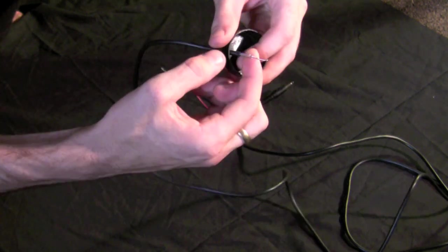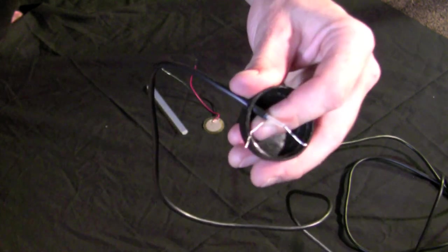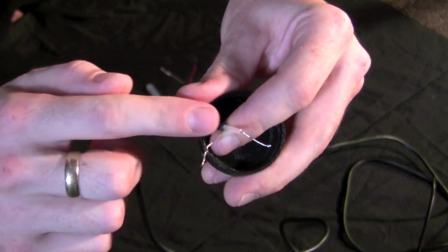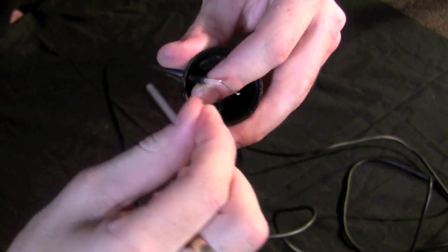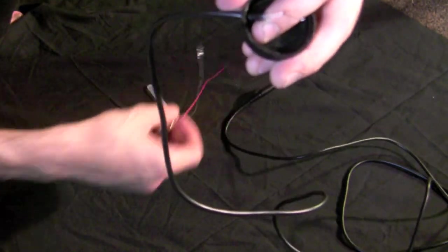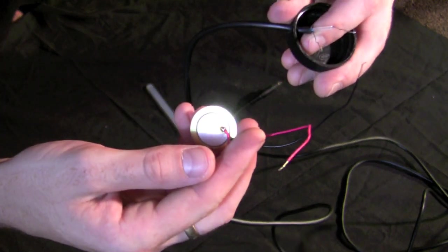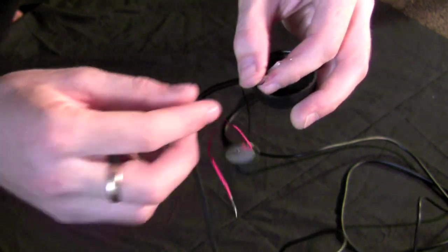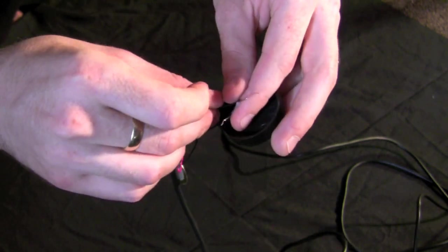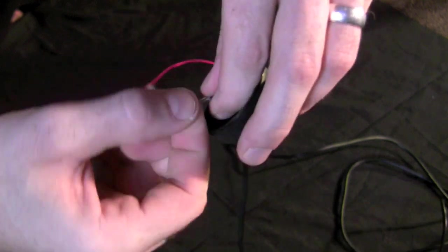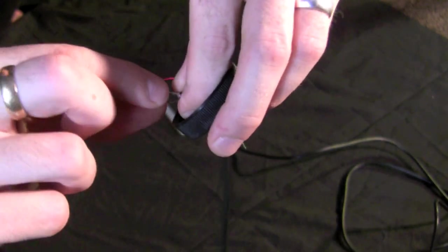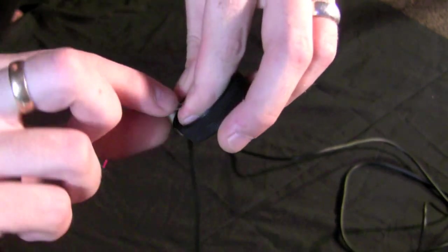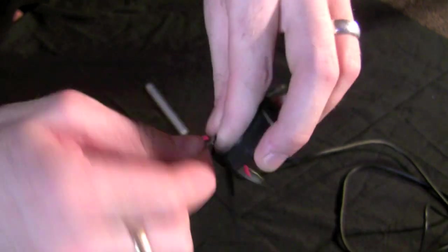Now pull the leads out. The one in the middle there with the shielding should be black and this one should be red on the wires connected to the Paizo. Take those and spin them together. Try to make a good connection so it kind of braids itself.